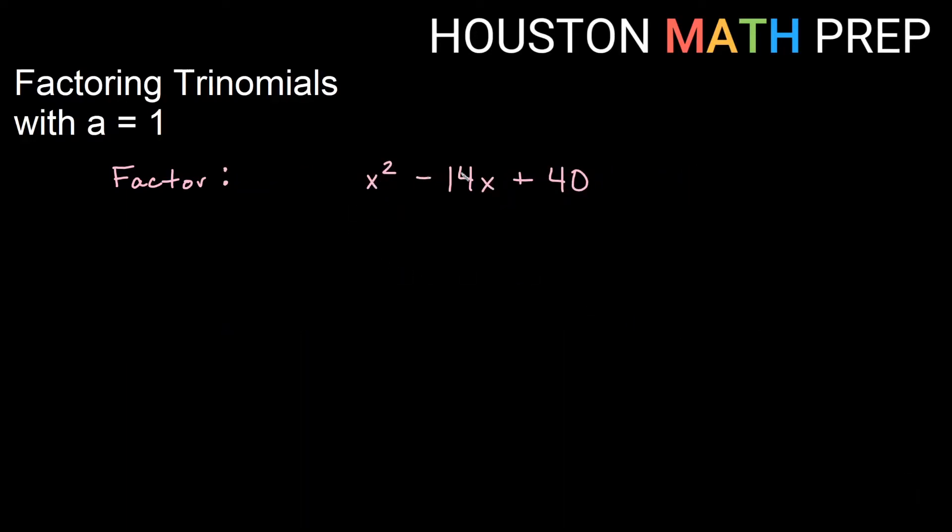So here I have x squared minus 14x plus 40, a equals 1 here, so I can use my shortcut. And so I look at a times c is just going to be c, right? So I look at numbers that will multiply to give us 40, and they will add to give us negative 14, which is the b. So I need numbers that will do that. I can see that multiplying to get a positive 40 means they're both the same sign, and adding to give us a negative means they're both negative. In this case, we have negative 4 and negative 10 will work.